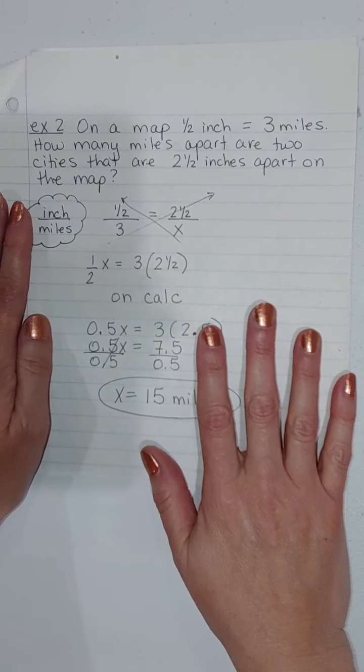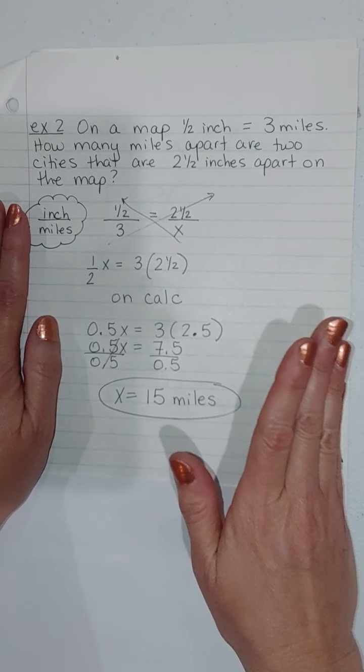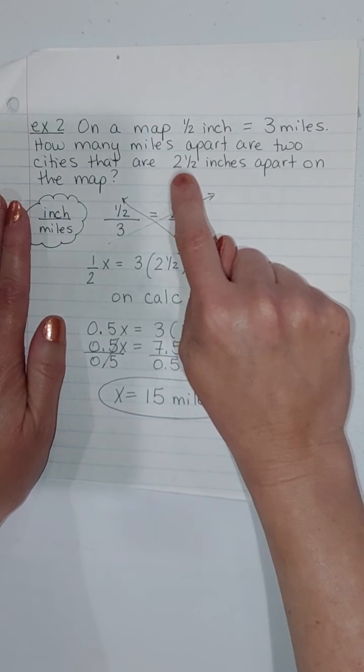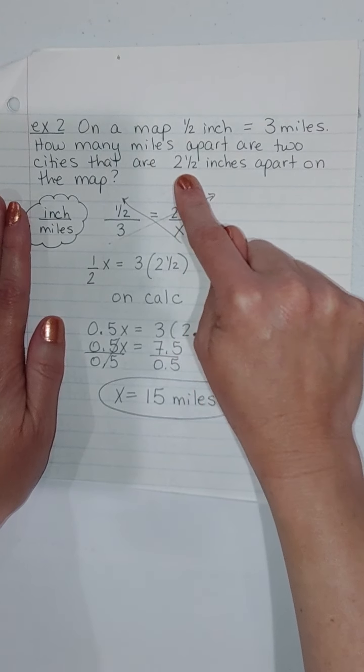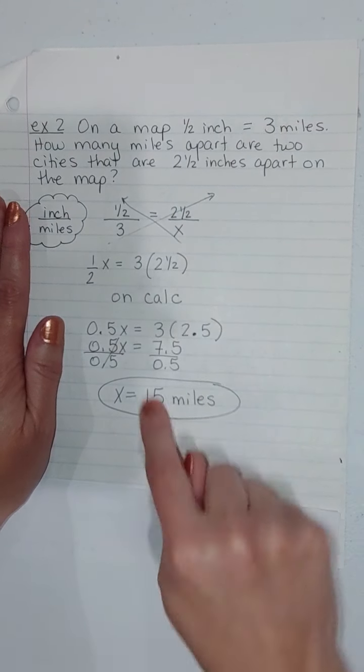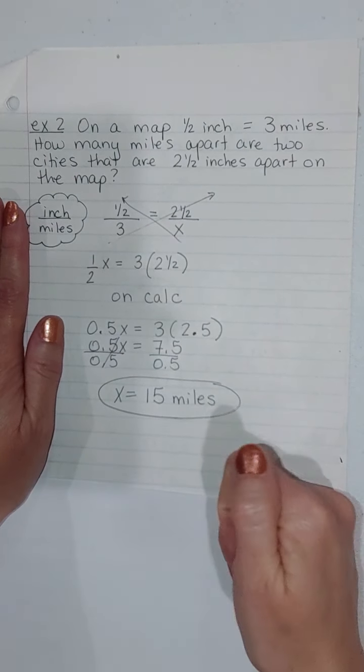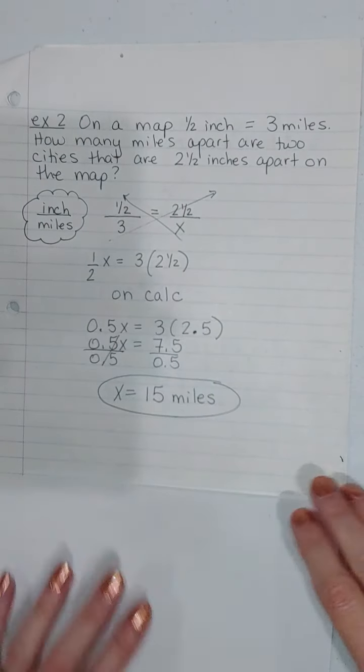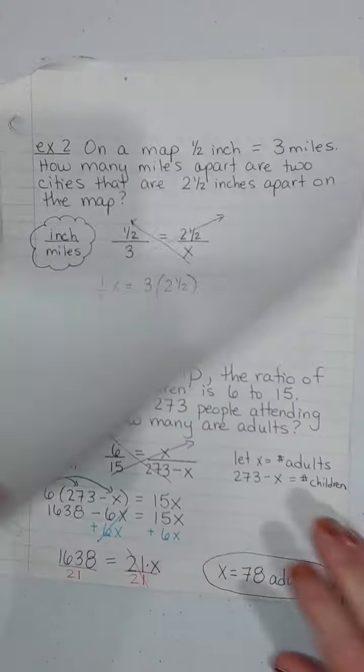I get one half X is equal to three times two and a half. You can use your calculator to do that one. So three times 2.5, I just changed them to decimals. 0.5 and three times 2.5, so I got 7.5. And then if I divide both sides by 0.5, I get X equals 15 miles. If you got this a different way, that's awesome. If you looked at it and said, well, each half an inch is three miles, so how many one half inches are these? That's five one half inch segments. So five times three is 15. If you got it that way, that's awesome. If you have no idea what I just said, forget it ever happened.